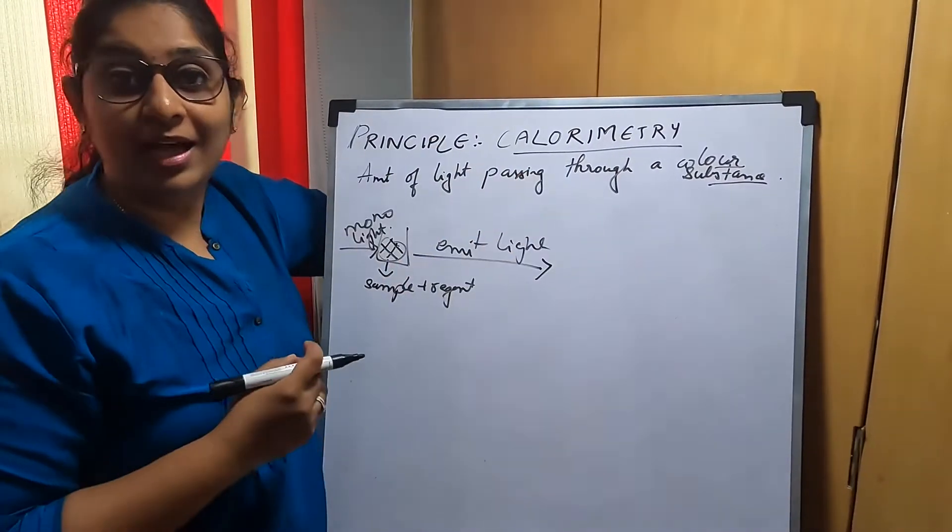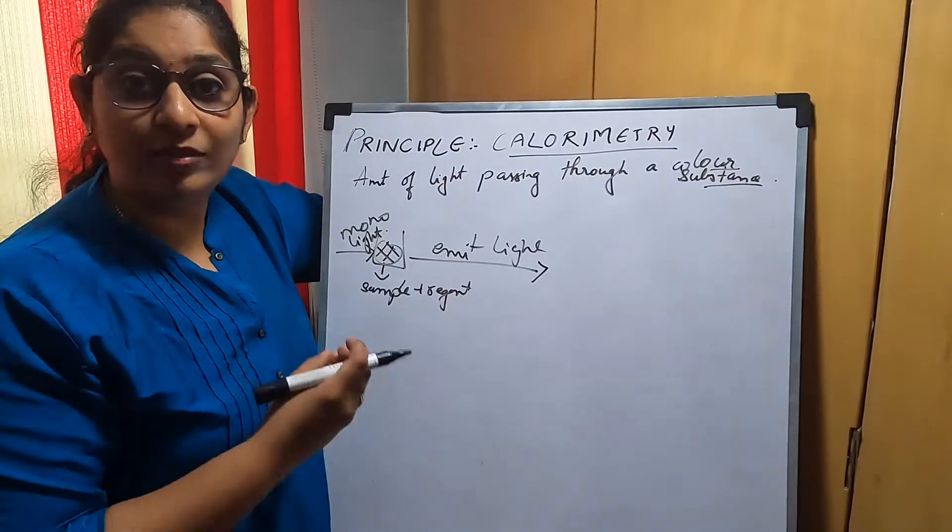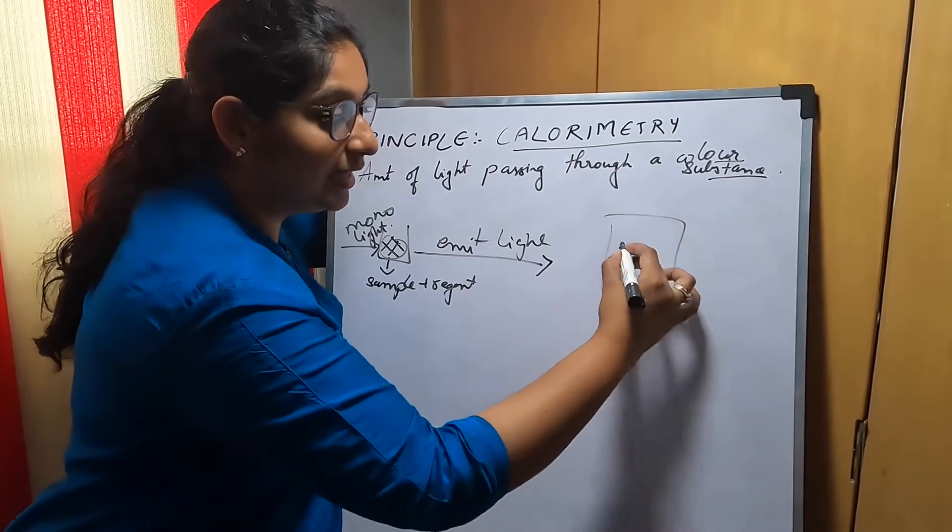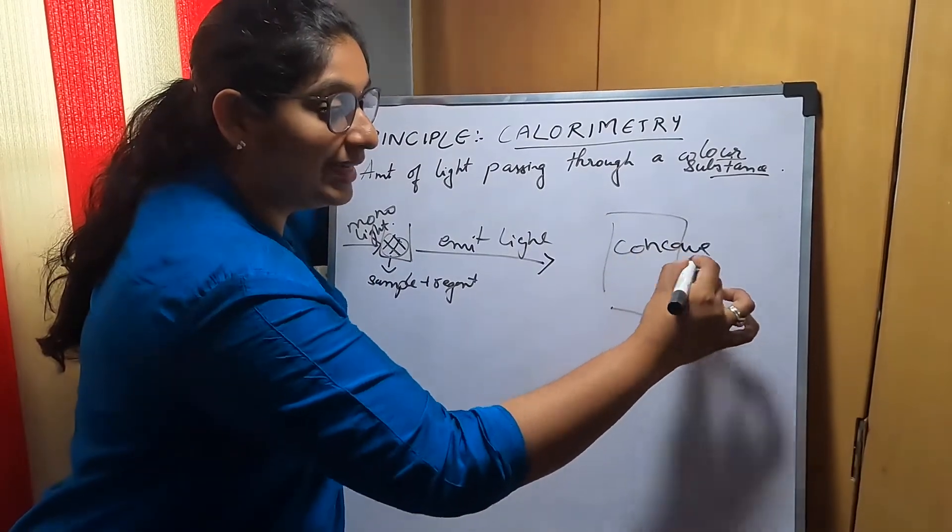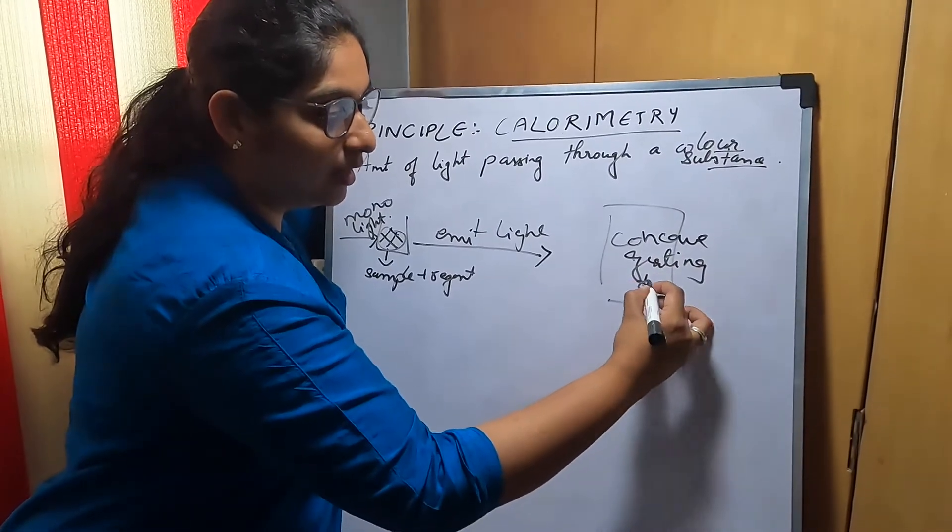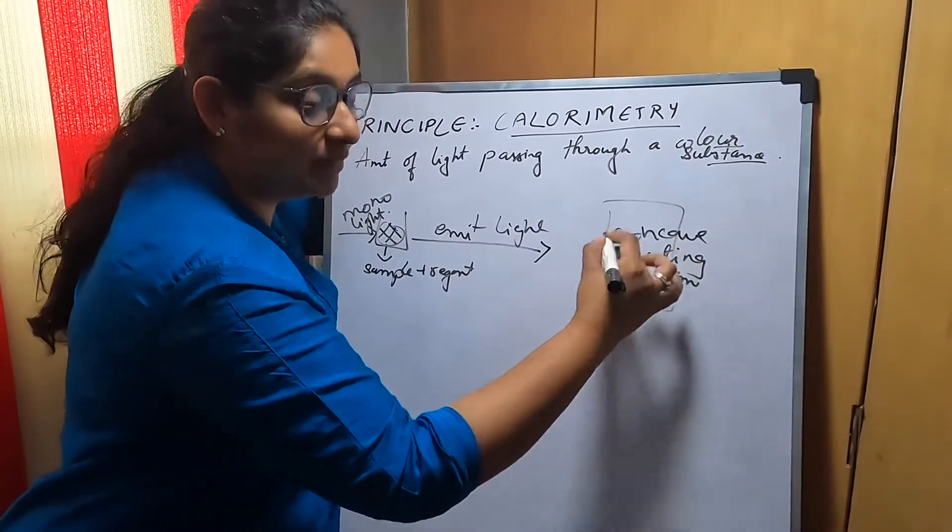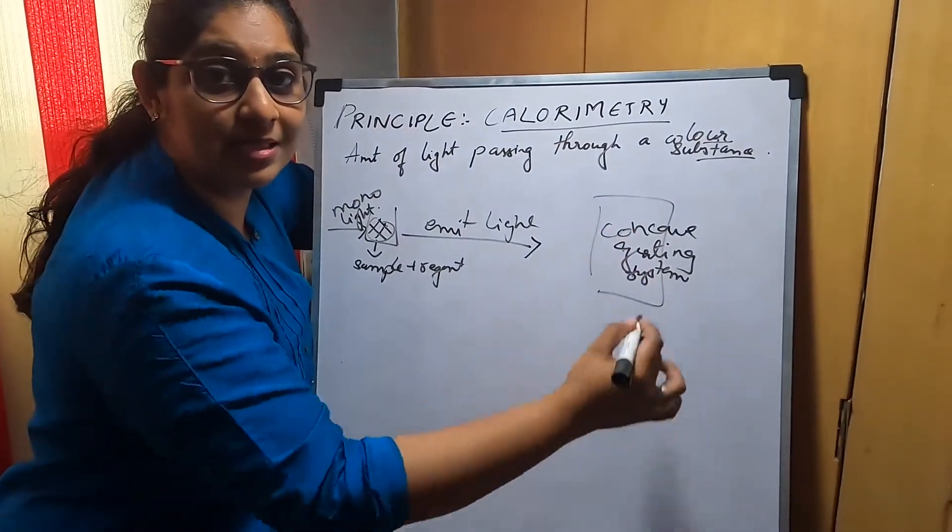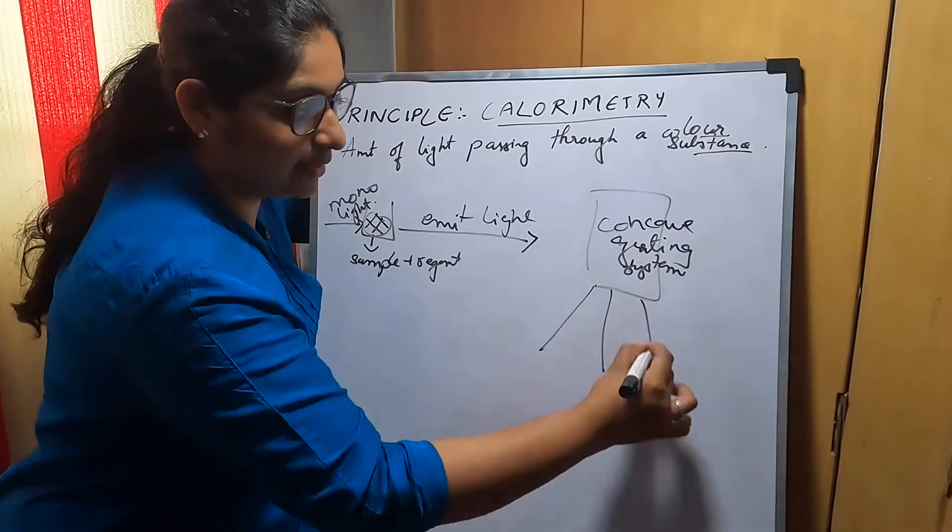These wavelengths are captured in a concave grating system at different wavelengths. From this concave grating system, it disperses the wavelength into the next system.